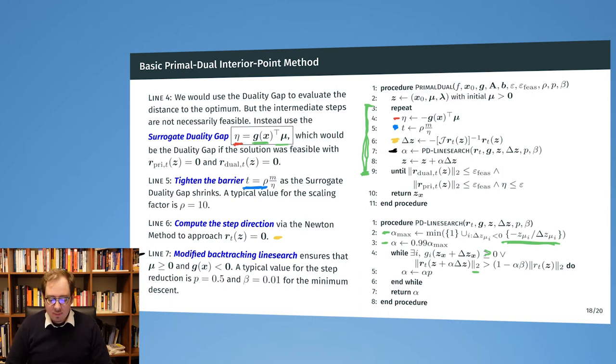We repeat that until we get to a solution that is close enough where both our primal and dual residual is really close to zero and also where our eta, our duality gap, is really close to zero. We can choose these epsilons here rather small.